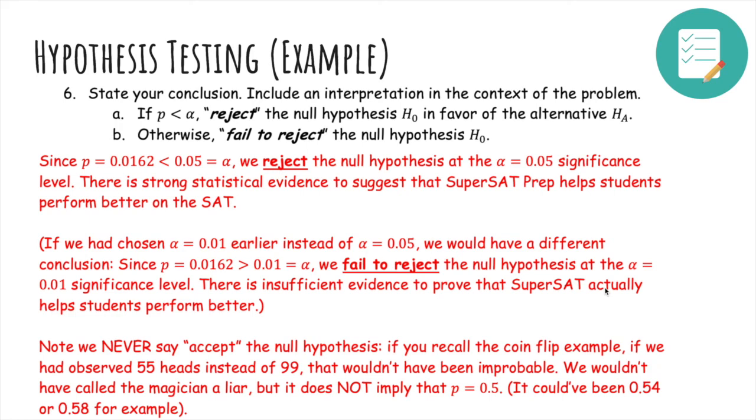And note that we'll never say we'll accept the null hypothesis. If you recall the coin flip example, if we observed 55 heads instead of 99, that wouldn't have been improbable. We wouldn't have called the magician a liar, but it did not imply that p was actually equal to 0.5. It could have been 0.54 or 0.58, for example.